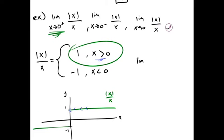So, limit as x approaches 0 from the right of absolute value of x over x equals 1.